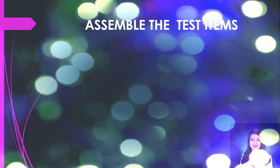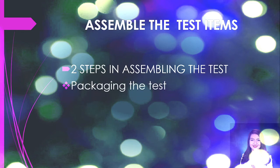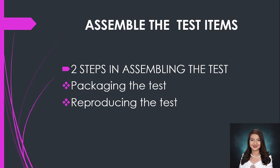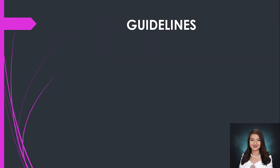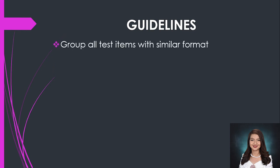Lastly, we're going to discuss how to assemble the test items. After constructing the test items following the different principles, the next step is to consider how to assemble them. We have two steps in assembling the test: first, packaging the test; and next, reproducing the test. We will consider the following guidelines. First, group all test items with similar format, so that students will not be confused.